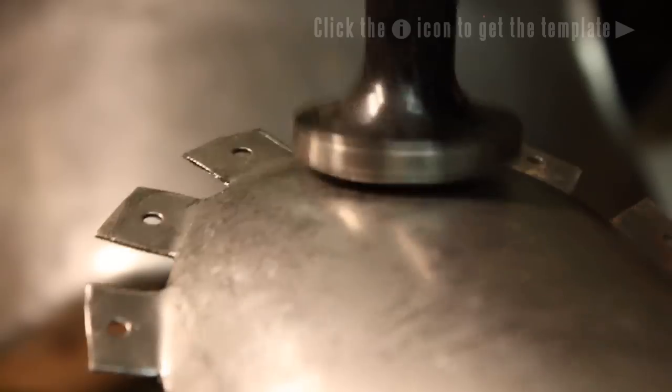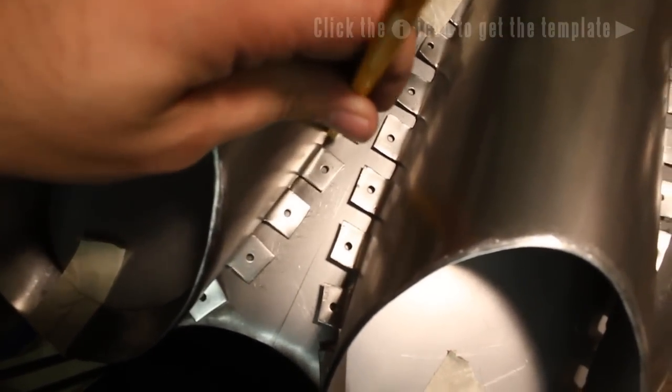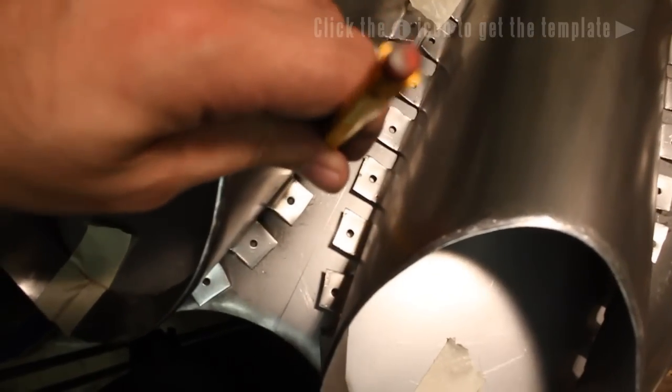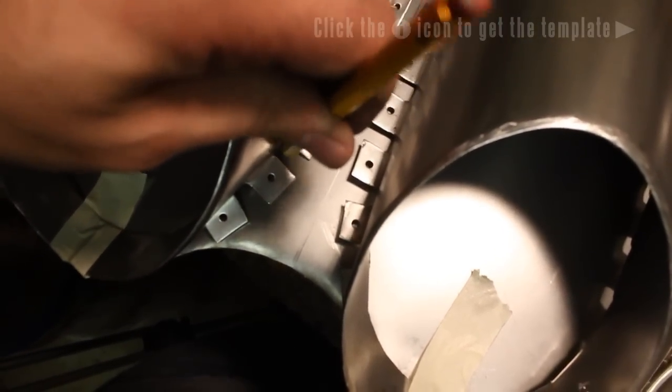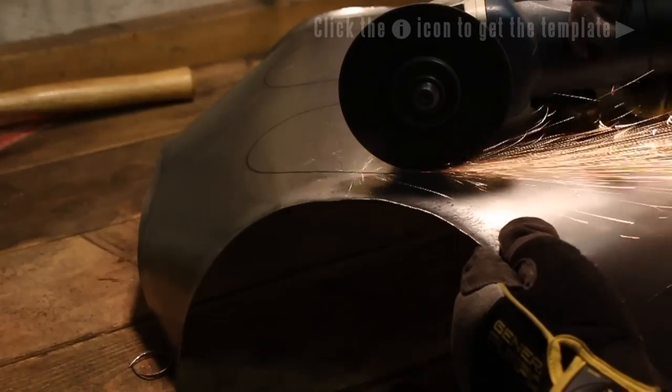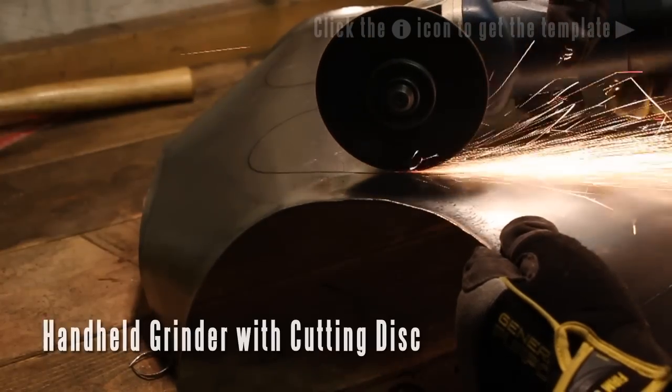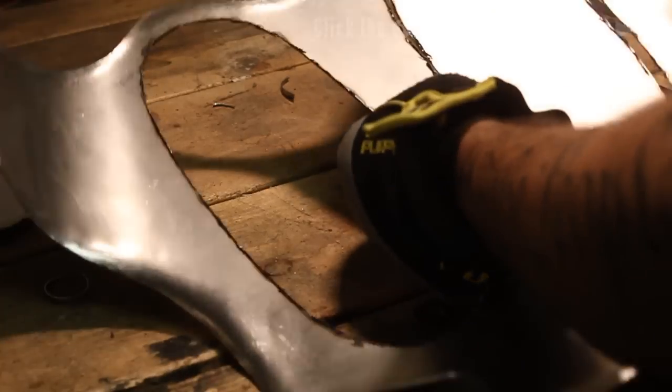And just planish it just like you would any other piece. Get it nice and flat. Now tape these parts down and then mark this edge, as you see me doing here. So this is where we're going to cut our holes to put these things through. Of course I've made the hole a little smaller, because you don't want to make the hole big. You want to make sure it's small, because you can always make it bigger, you can't make it smaller.